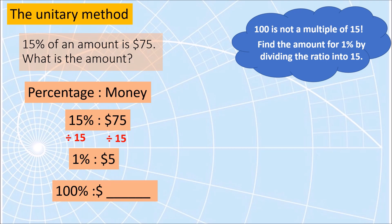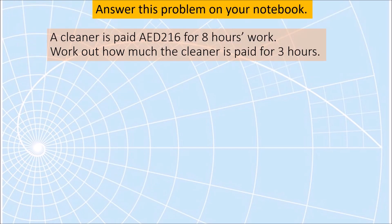To get 100% we multiply the left side by 100 and do the same on the right hand side. Five times 100 is 500, so the missing amount is $500. We can check that 15% of 500 is 75 dollars. Solve this problem on your notebook, pause this video and come back when you are done to check your work.